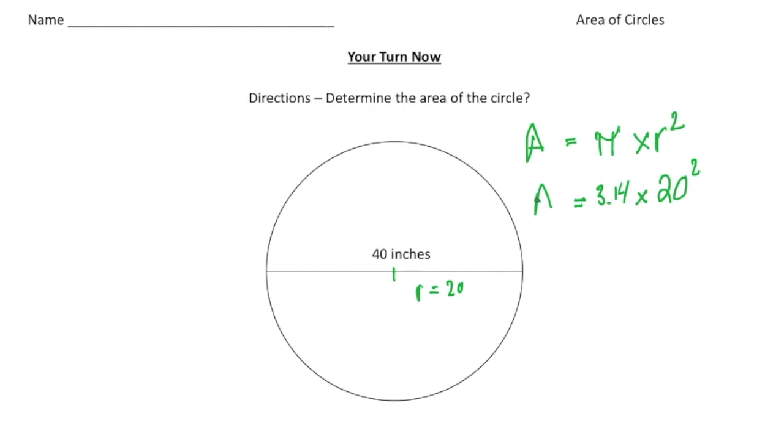And again, follow our operations. We need to do the exponent before we multiply. So 20 squared is 400 times 3.14, which will equal the area.